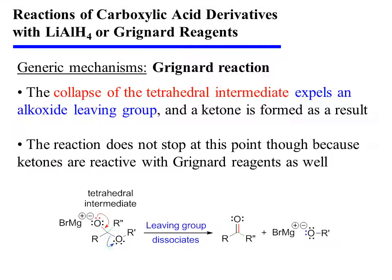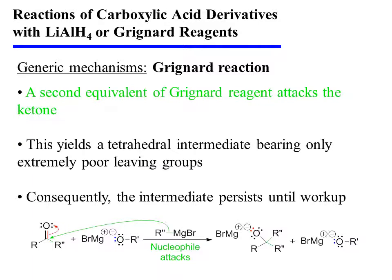The subsequent collapse of the tetrahedral intermediate expels an alkoxide leaving group, and a ketone is formed as a result. The reaction does not stop at this point, though, because ketones are reactive with Grignard reagents as well. Consequently, a second equivalent of Grignard reagent attacks the ketone carbonyl. As pi electrons are pushed onto oxygen, a tetrahedral intermediate is formed that bears only extremely poor leaving groups.